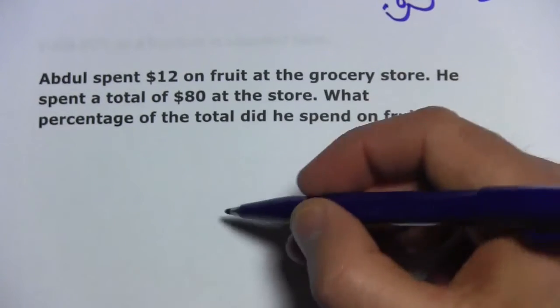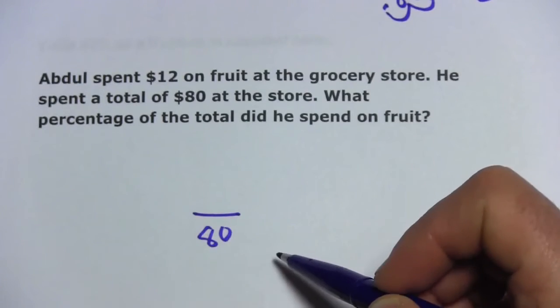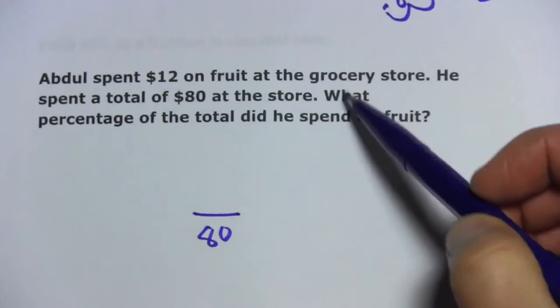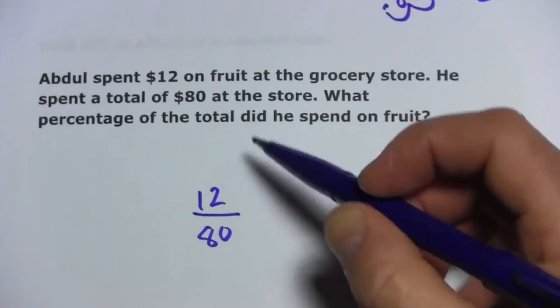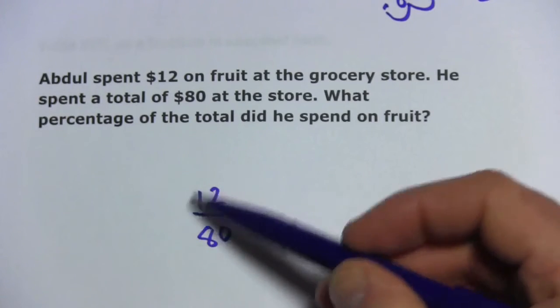So in setting up the ratio, we want the total number, the whole number on the bottom. That's 80. That's how much he spent at the grocery store. The amount he spent on fruit is going to go on top. So this is 12 out of $80 that he spent on fruit. So there's our ratio.